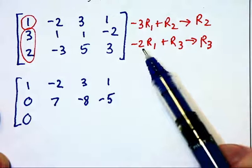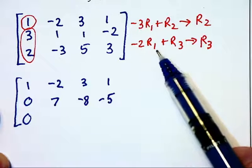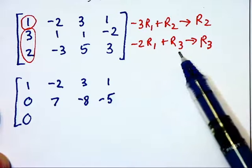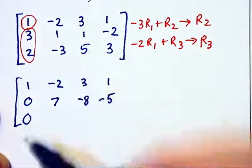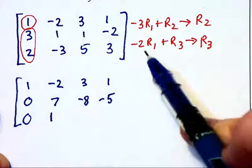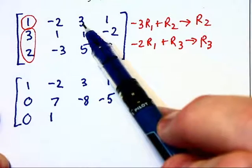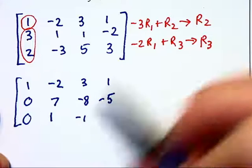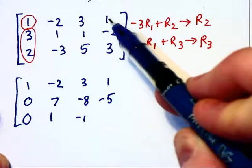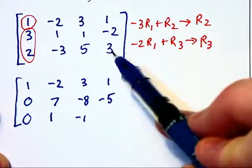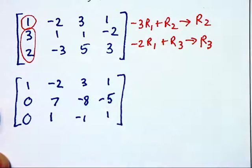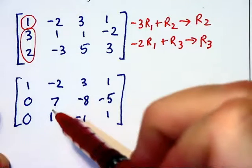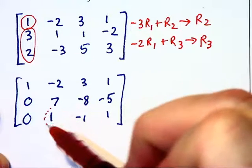Then, -2 times the row 1 to cancel out with row 3. -2 times -2 is 4, plus this -3 makes 1. -2 times 3 is -6, plus 5 makes -1. And -2 times 1 is -2, plus this 3 makes 1. So we've now got a new matrix with a 1 not where we want it.